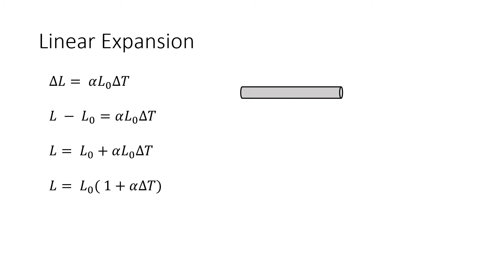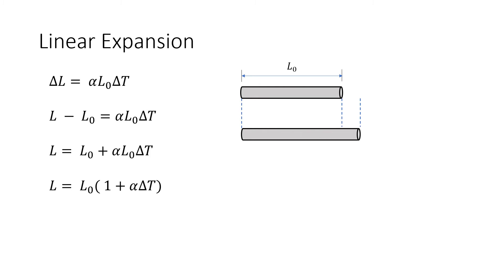So let's say we have a material with a particular length — that is its LO, or original length, or initial length. When the material increases its temperature, it will expand. The length will change or increase, and that will be our delta L, the change in length — that is, final length minus the initial length.